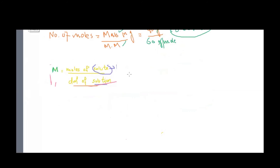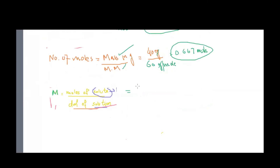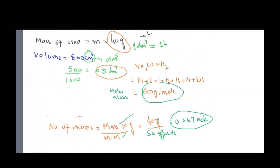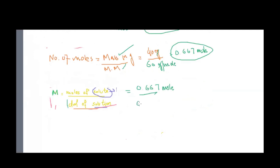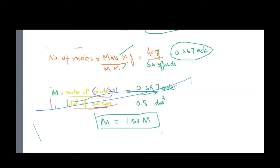Now putting these values into the molarity formula: M = 0.667 moles / 0.5 dm³ = 1.33 M. So the molarity of the urea solution is 1.33 M.